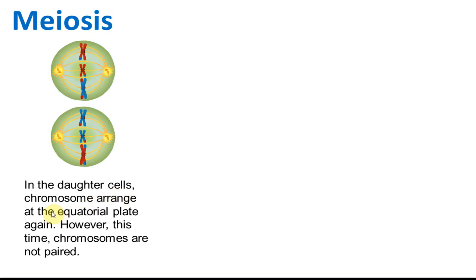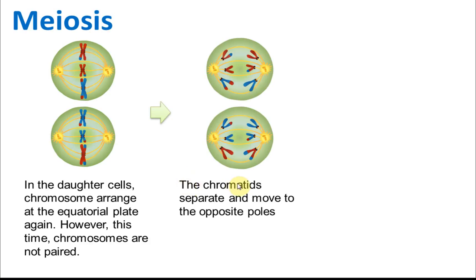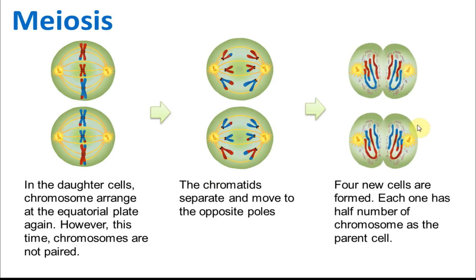In the two daughter cells, the chromosomes arrange at the equatorial plate again — however, this time the chromosomes are not paired. The chromatids then separate and move to the opposite poles, resulting in four new cells each containing half the number of chromosomes of the parent cell.